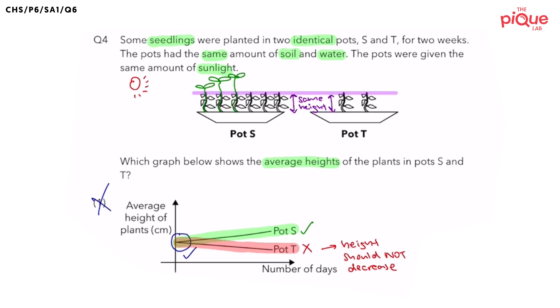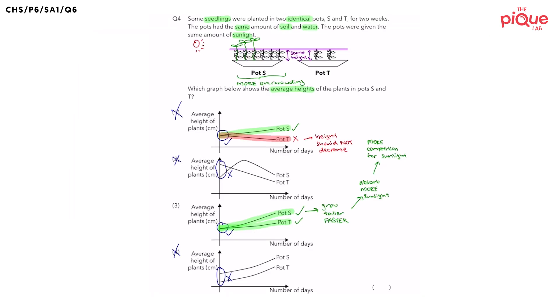Now, do you remember what it's called when there are too many plants growing near each other? This is called overcrowding. So we can see that in pot S there is more overcrowding and this leads to more competition for sunlight.